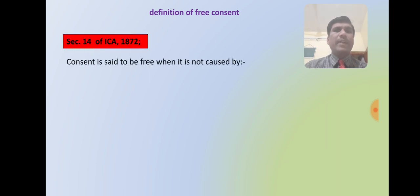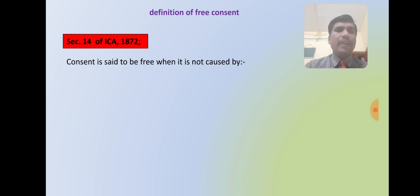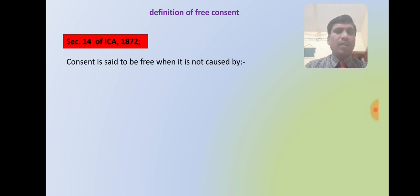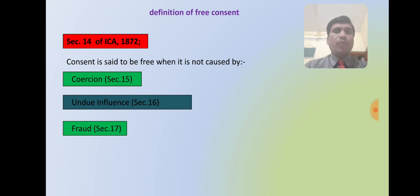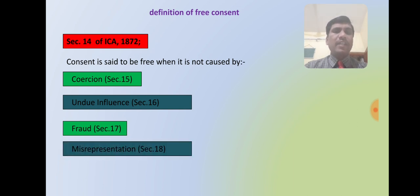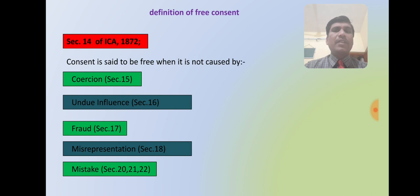Section 14 of the Indian Contract Act provides that consent is free when it is not caused by certain factors. It is given in a negative sense — it does not state when consent is free, but states when consent is not free. There are five essential requirements under which consent is not free: coercion (Section 15), undue influence (Section 16), fraud (Section 17), misrepresentation (Section 18), and mistake (Sections 20, 21, and 22).